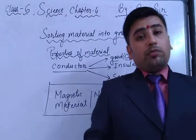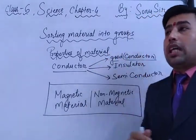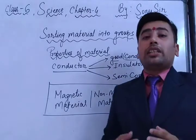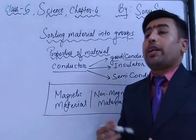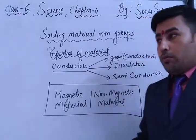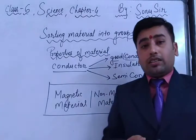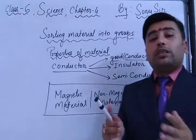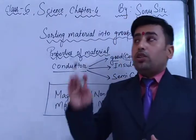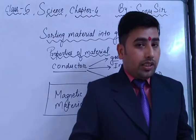As we have studied in this chapter, we can sort materials according to different properties: uses, physical state (solid, liquid, gas), hardness or softness, soluble or insoluble, opaque, transparent, or translucent, good conductors, bad conductors, or semiconductors, and magnetic or non-magnetic. All these properties help us understand how to sort materials into groups.